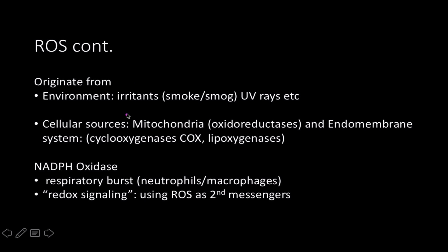Common colloquial sources of reactive oxygen species include irritants, carcinogenic compounds, smoke, smog, and UV rays — pretty much anything that forms a radical. There are also cellular sources. The mitochondria is one of the primary sites of oxidative phosphorylation, so it makes sense that it would be involved in producing reactive oxygen species. There are other cellular sources as well, like cyclooxygenases and lipoxygenases.